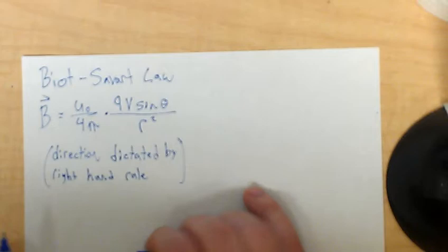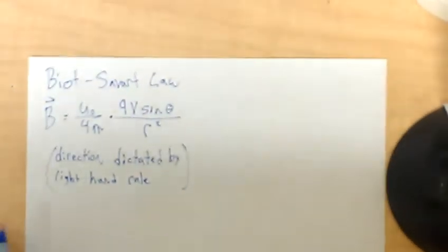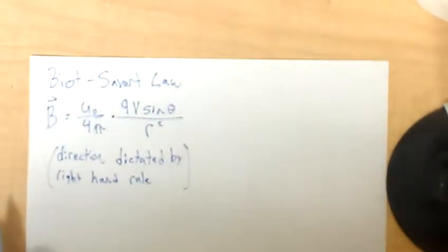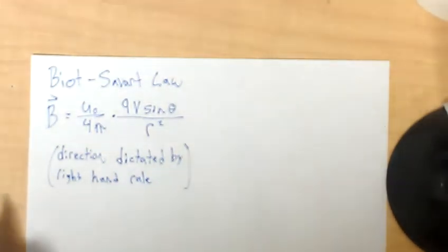Okay, so that's the Biot-Savart law. B equals u-naught over 4 pi times QV sine theta over r-squared. The direction is dictated by the right-hand rule.